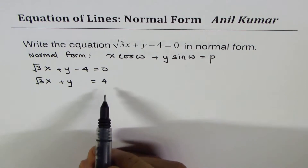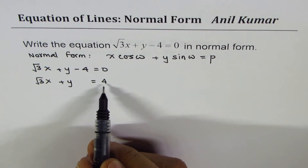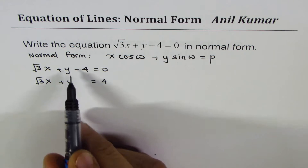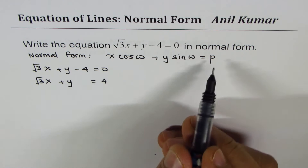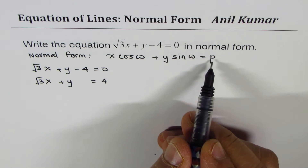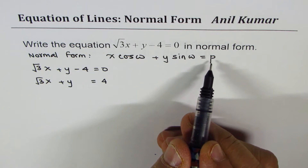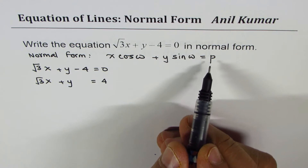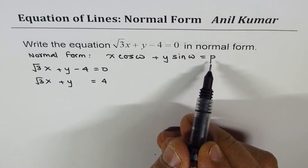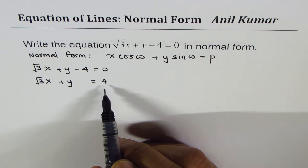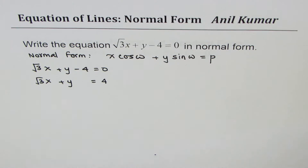We have to keep this right-hand side always positive. In this particular case it is positive, since p is the length of the normal — that is, the distance of the line from the origin, and distance is always positive.